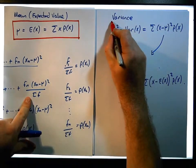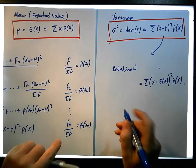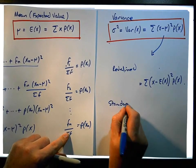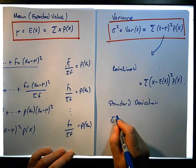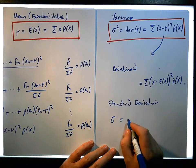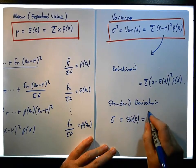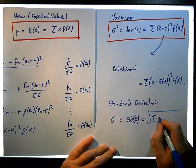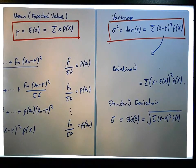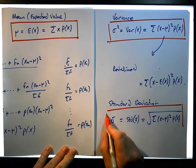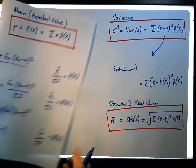The standard deviation is simply the square root of the variance. So the standard deviation, sigma, equals the square root of the sum of (x minus mu) squared times P(x). Those are our three formulas: mean, variance, and standard deviation.